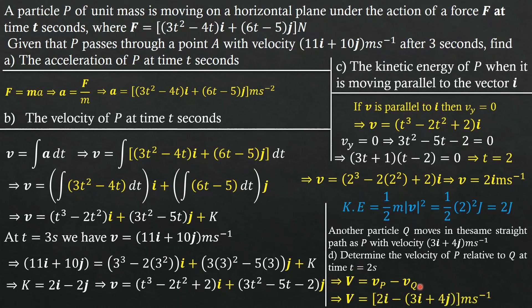Substituting the values, the velocity of P relative to Q equals 2i − (3i + 4j) meters per second. Simplifying, we get the velocity of P relative to Q at T = 2 seconds to be −i − 4j meters per second.